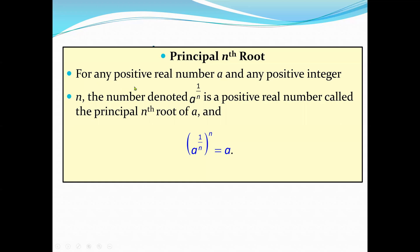For any positive real number a and any positive integer n, the number denoted a raised to the power one over n is a positive real number called the principal nth root of a. If we remember a root sign, the exponent is always one over the value — square root has exponent one over two, cube root one over three.